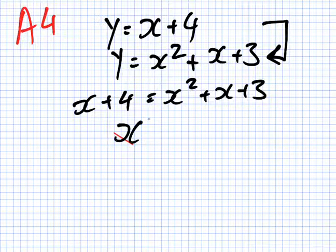So I get x squared. The x is cancelled. So if you prefer, you can write in 0x, and then 3 minus 4 is minus 1.